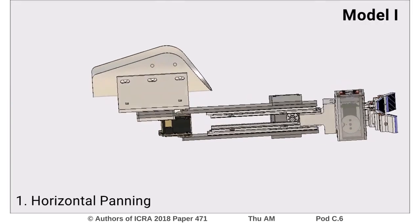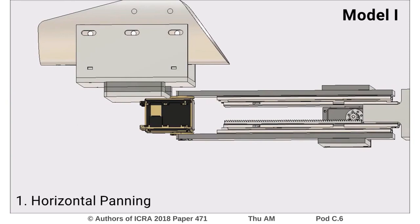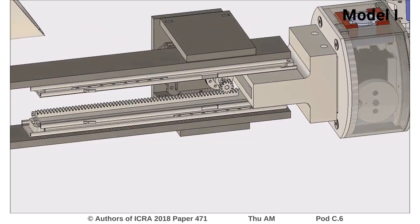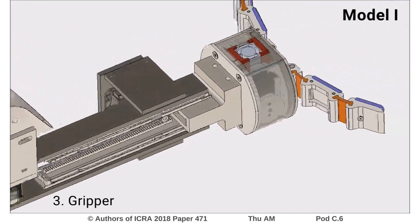The first prototype, Model 1, had three degrees of freedom: horizontal panning, length extension using a rack and pinion mechanism, and a soft compliant cable ribbon two-fingered gripper.